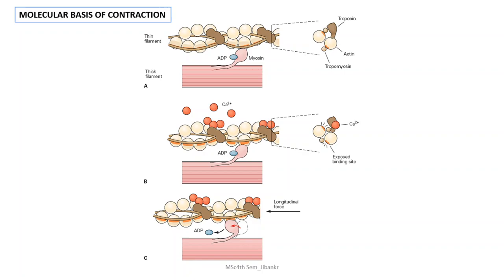From the cocked state, another cycle of contraction may occur. In one second, there may be about three cycles of contraction-relaxation. That is the molecular basis of muscle contraction, particularly true for skeletal muscle.